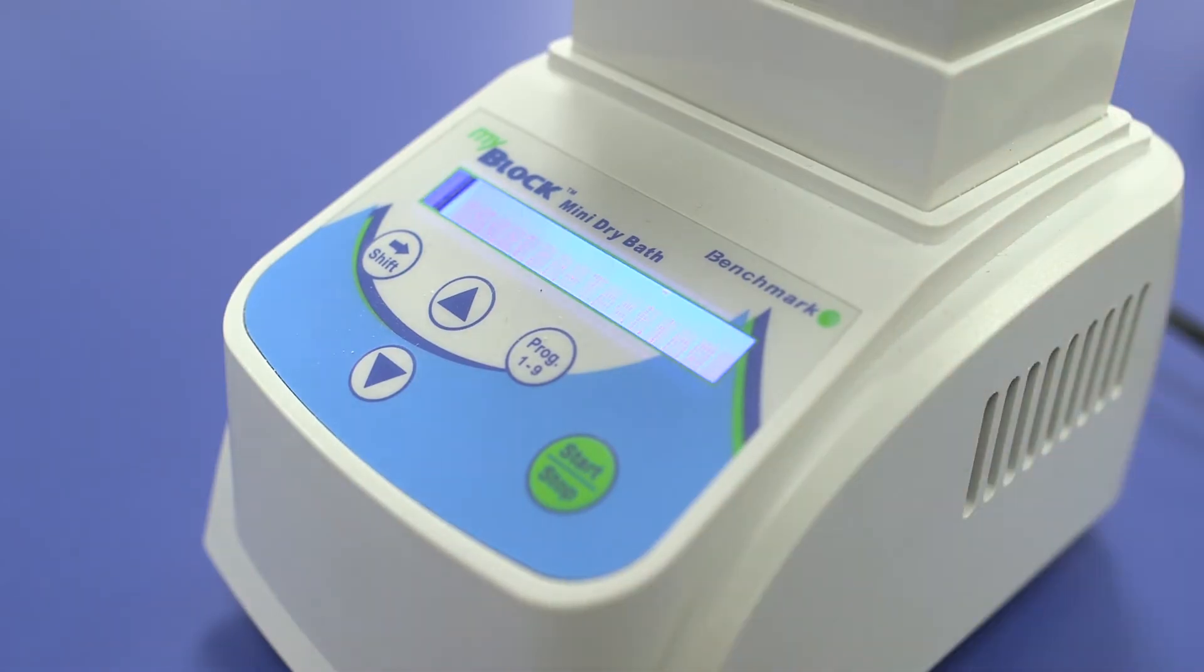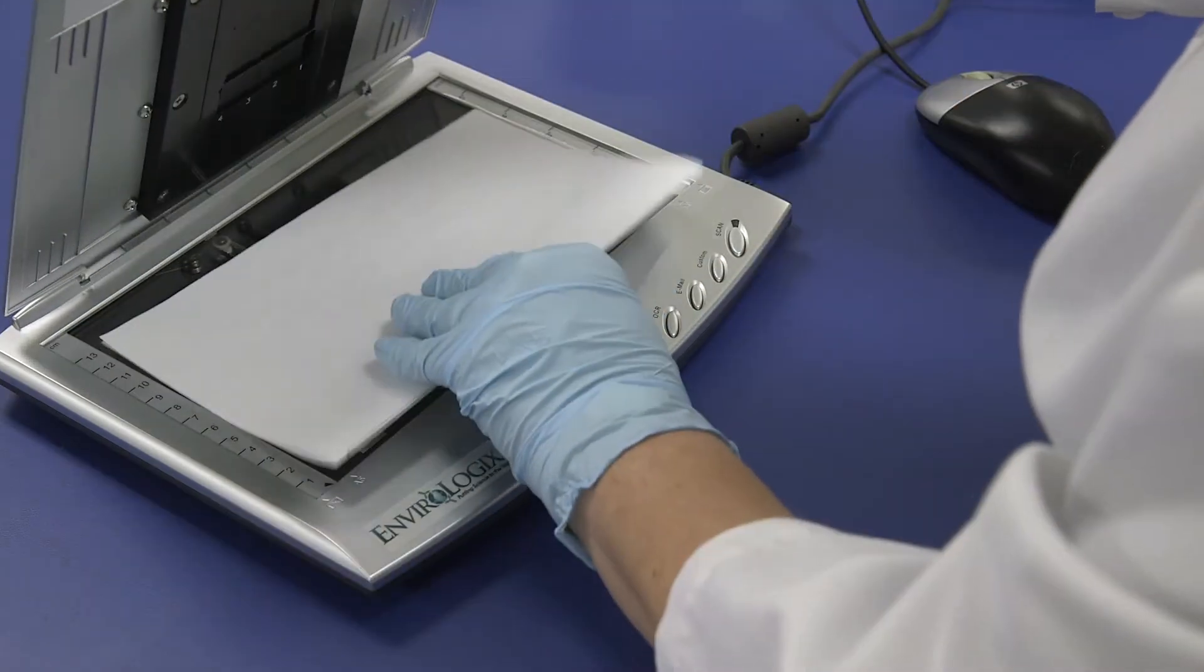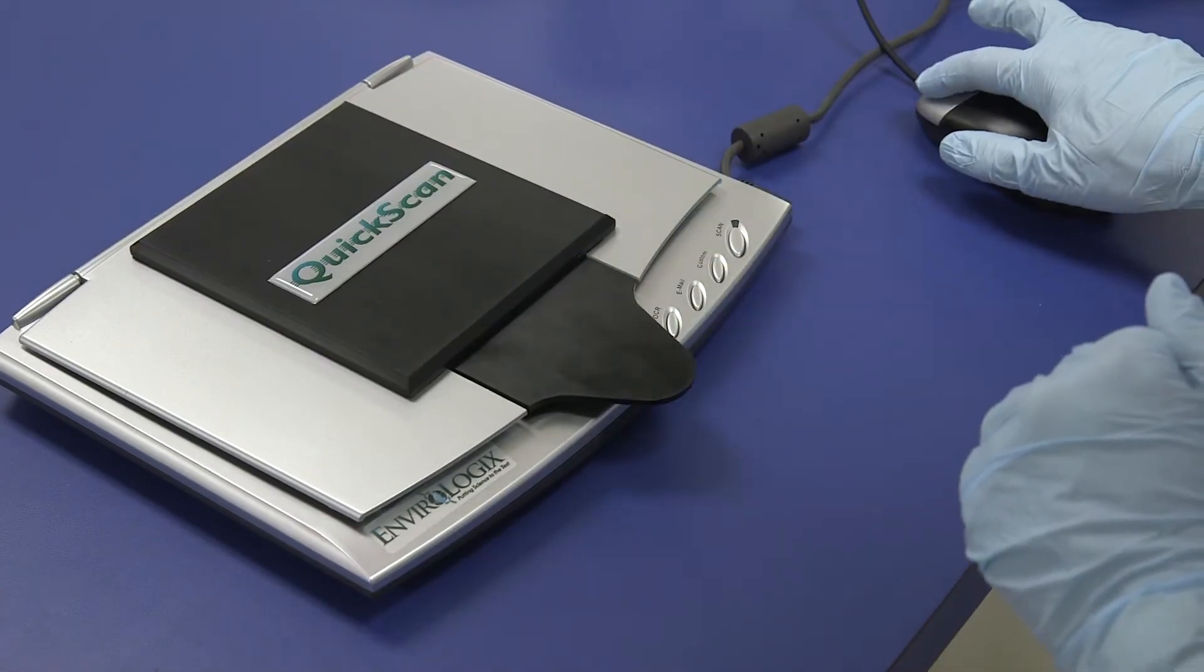Before testing, turn the incubator on and set to 22 degrees Celsius at least 10 minutes before use. Scan the common extraction barcode on the multi-matrix barcode cards. Each mycotoxin FLEX test kit will have a lot specific card.